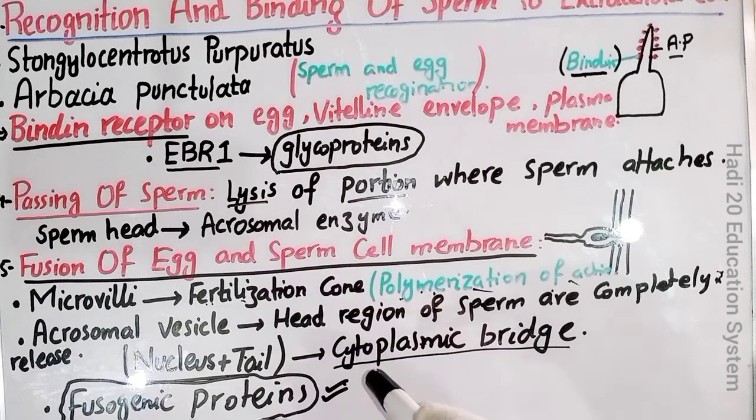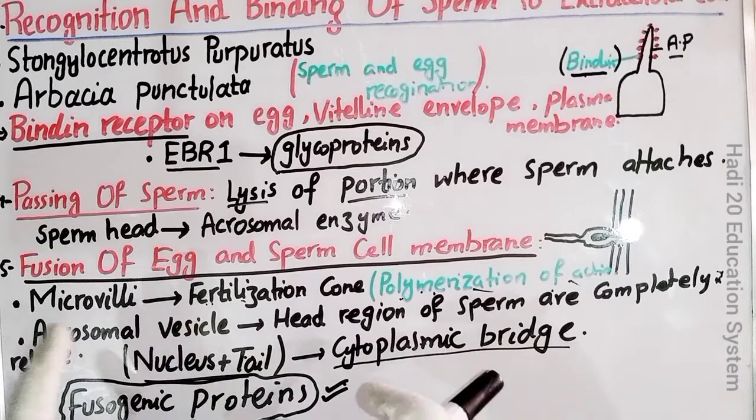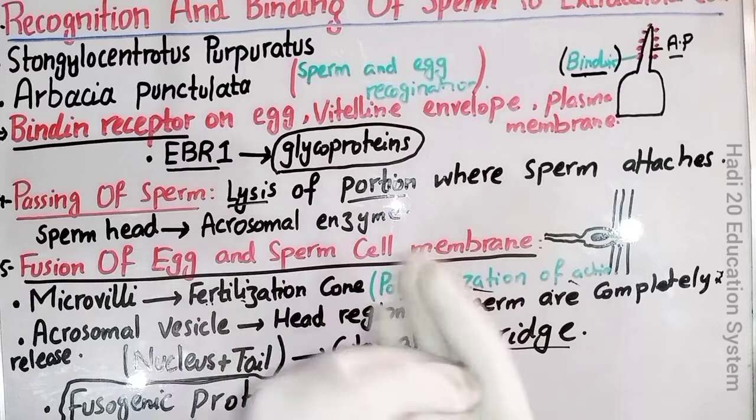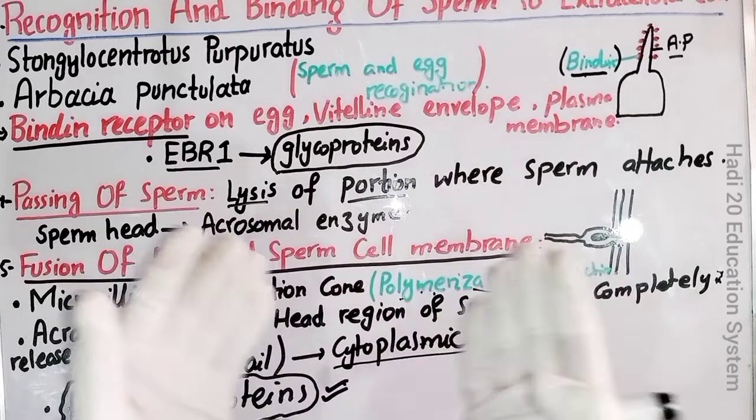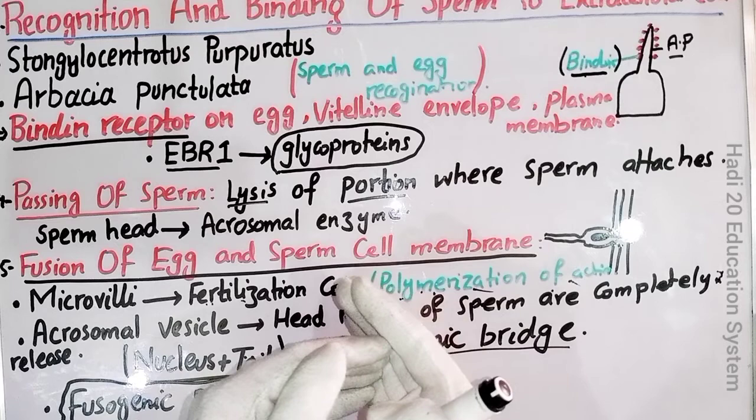تو یہاں پر dear friends جو external fertilization کا mechanism ہے sea urchins کے اندر — دو species: Strongylocentrotus purpuratus اور Arbacia punctulata — وہ complete ہو چکا ہے۔ انشاءاللہ جو next lecture ہوگا وہ 'regulation of sperm entry into the egg cell' پر ہوگا — ہم یہ دیکھیں گے کہ جب ایک sperm cell نے egg cell کو fertilize کر دیا تو fertilization کے بعد egg کس طرح سے ایک external protective layer بنا لیتا ہے تاکہ مزید sperm آ کے fertilize نہ کر سکے، تاکہ abnormal zygote نہ بنے اور polyspermy سے بچا جا سکے۔ Stay connected and Allah Hafiz.